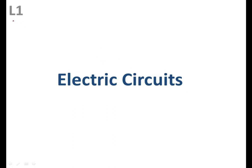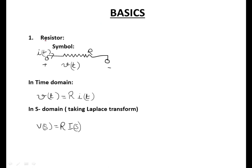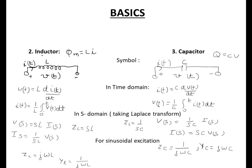Hello everyone, this is the first lecture of electric circuits. Welcome to this course. Before going into this course, we'll understand the basics of electric circuits. We'll start from the basic component: the resistor. Its symbol is like this, and V is equal to IR — that is Ohm's law. In time domain it is written like this, and if you take the Laplace transform then you will write this.